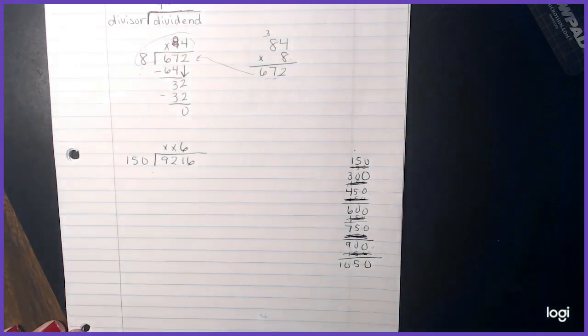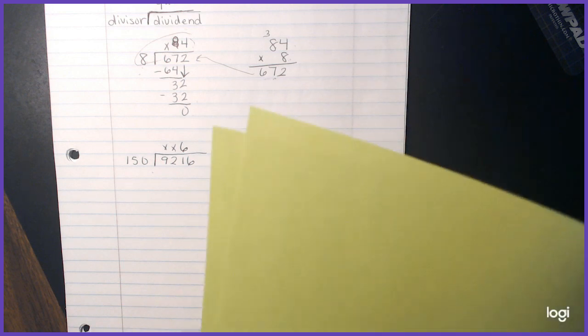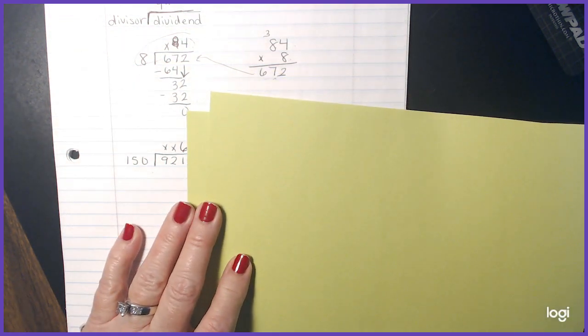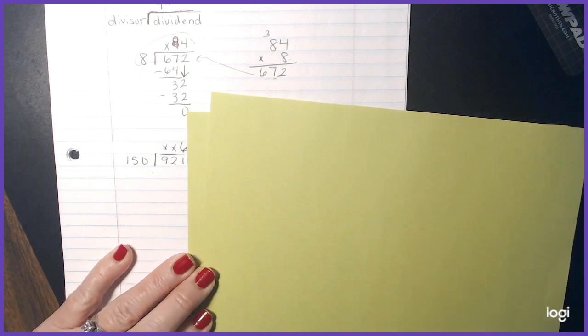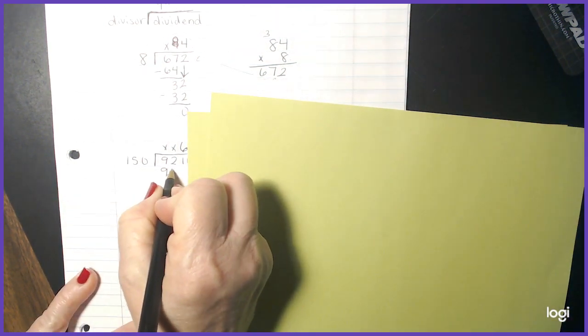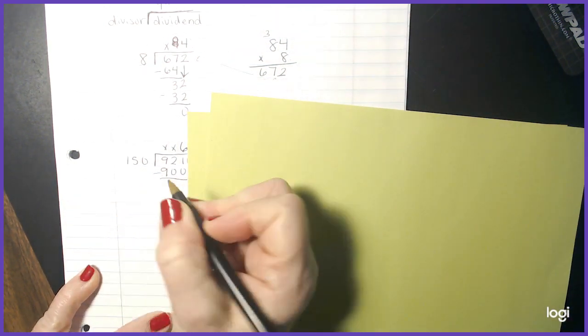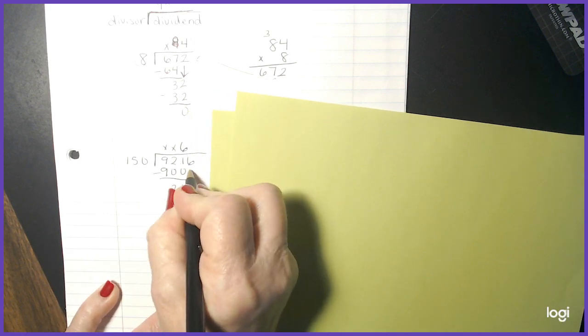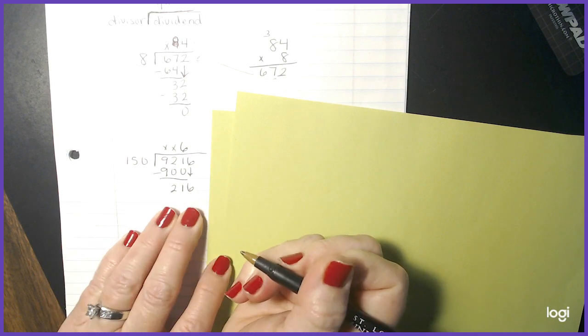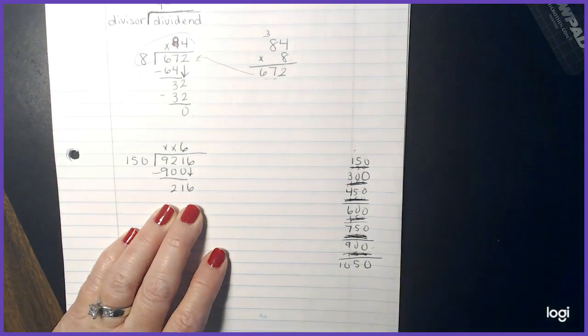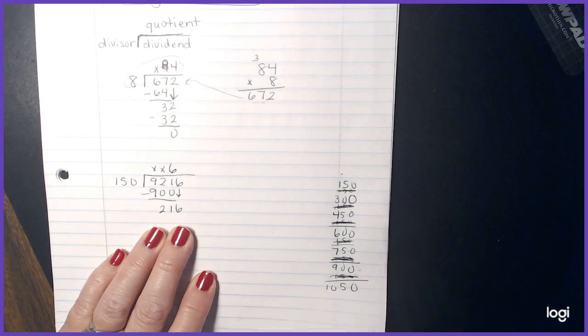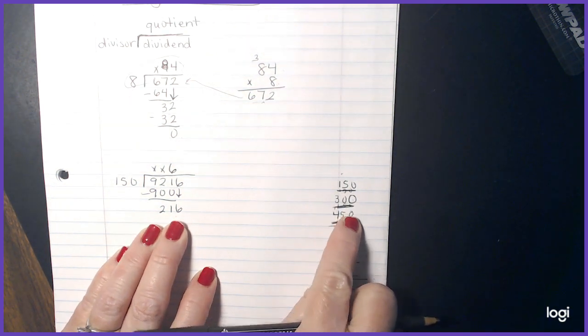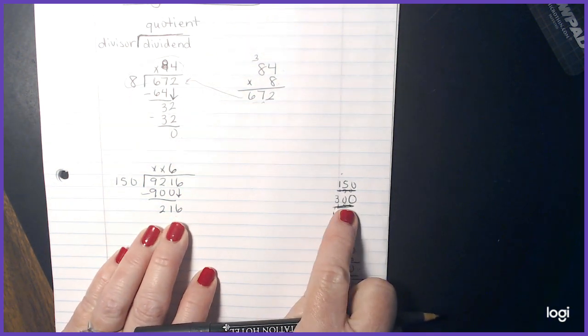I'm going to keep everything nice and straight. I'm putting a six right over the 921. I found out that the answer is 900. And I'm going to subtract. And I'm going to bring down six. Now, since I've already counted my 150s over here, I can come over and look. 150 times 1, obviously, is 150. Times 2 is 300.